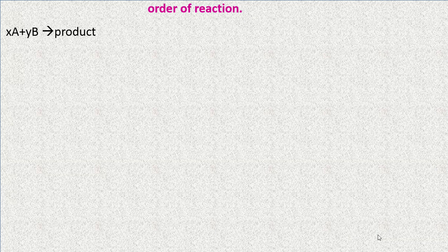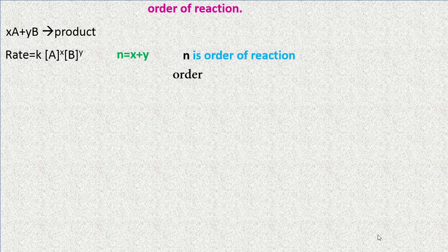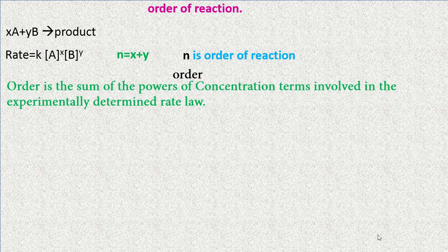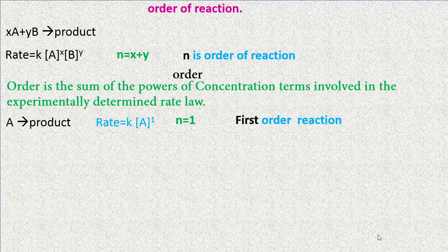Order of reaction: consider xA + yB → product. The rate law is rate = k[A]^x[B]^y, where n = x + y. x and y are the stoichiometric coefficients of the reactants, and n is the order of reaction. Order is the sum of the powers of the concentration terms involved in the experimentally determined rate law. For A → product, rate = k[A]^1, so n = 1, giving a first order reaction where rate depends on only one concentration term.